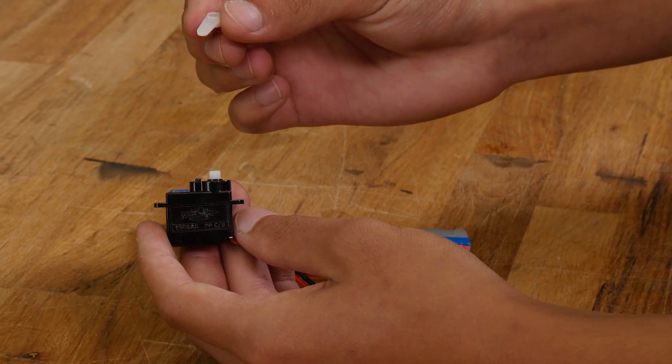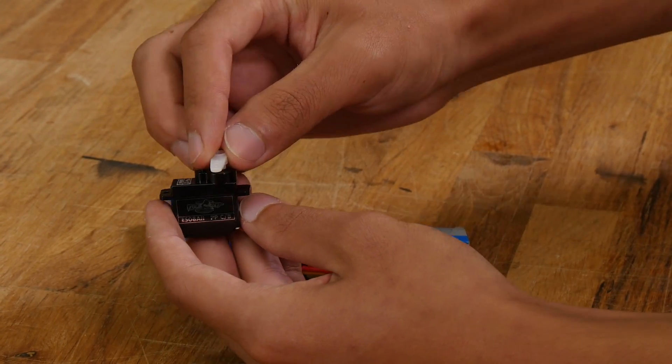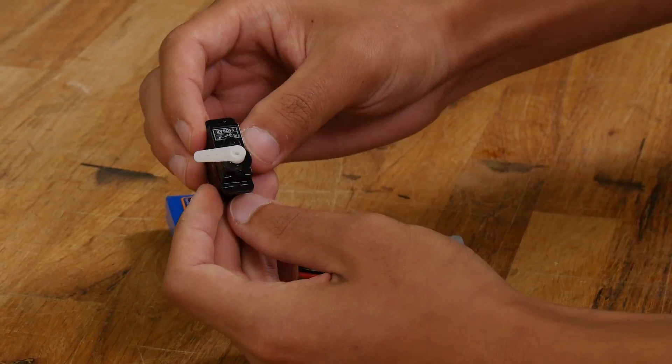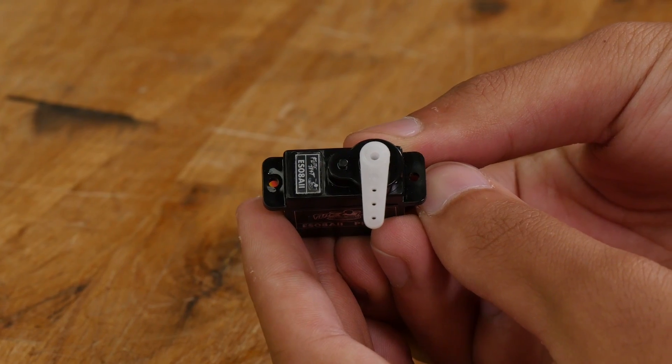Now that your servo is centered, you can put the servo arm on. Most of the time, this will just go on 90 degrees to the servo like this, but you can put it on in any orientation depending on your build.